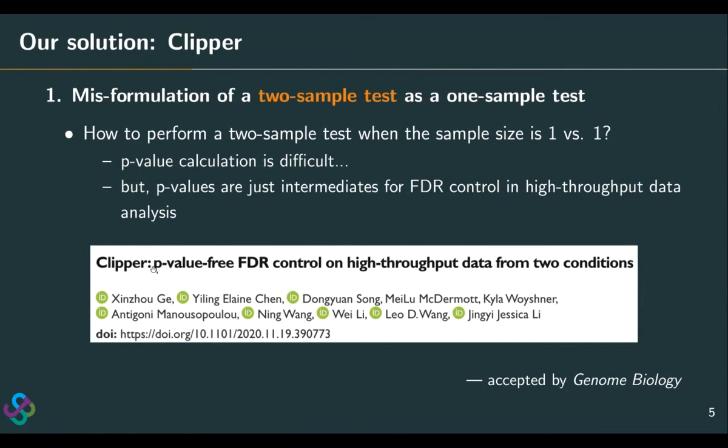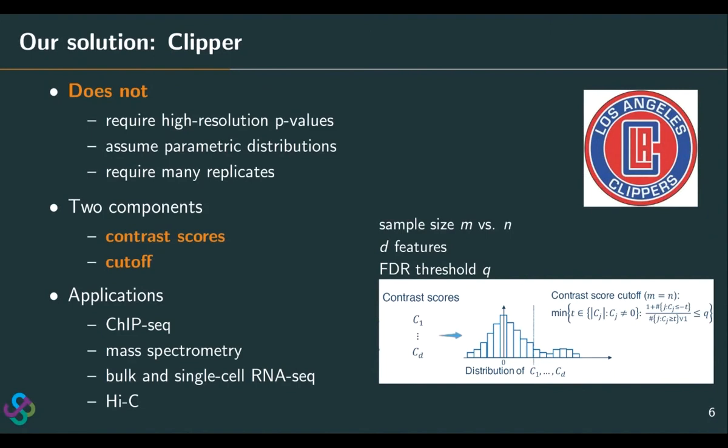Clipper is a framework for achieving FDR control in high-throughput data analysis from two conditions. The advantage of Clipper is that it no longer requires p-values, and our work has been accepted by the journal Genome Biology. To highlight the advantages: it does not require high-resolution p-values, it does not assume parametric distributions as most methods do — I will talk about this issue in my second cause — and Clipper does not require many replicates, making it a very flexible framework.